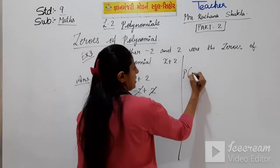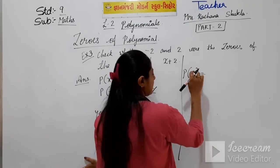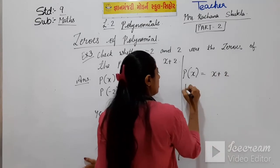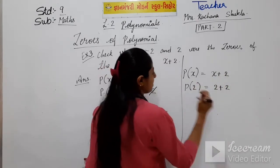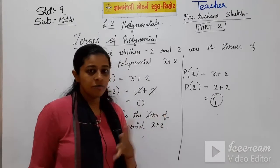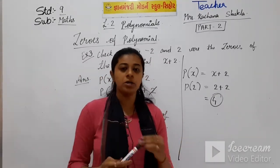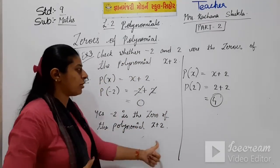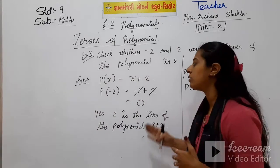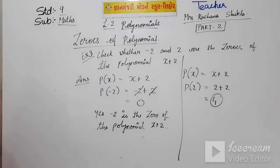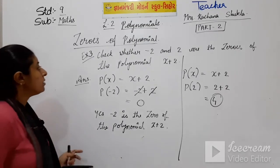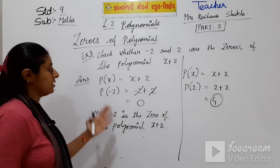Now let's try with 2. P of x equals x plus 2, so P of 2 equals 2 plus 2, which equals 4. We got 4, so 2 is not the zero of the polynomial. Minus 2 is the zero of the polynomial. Solve this in your example book.